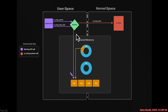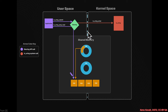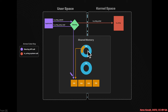When user space is queuing things up, it creates submission queue entries and puts them in the submission queue. When everything is queued up, it calls io_uring_enter — the system call telling kernel space to start processing that submission queue.